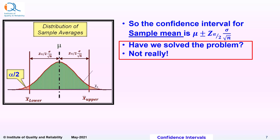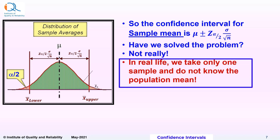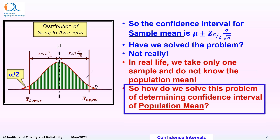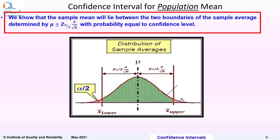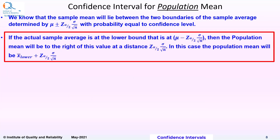Have we solved the problem? Not really. In real life, we take only one sample and do not know the population mean. So how do we solve this problem of determining the confidence interval of population mean? Let us see how to determine confidence interval for population mean when we know only a single value of the sample mean. We know that the sample mean will lie between the two boundaries of the sample average determined by mu plus or minus z alpha by 2 sigma by square root n with probability equal to confidence level. If the actual sample average is at the lower bound, that is at mu minus z alpha by 2 sigma by square root n, then the population mean will be to the right of this value at a distance z alpha by 2 sigma by square root n. In this case, the population mean will be x bar lower plus z alpha by 2 sigma by square root n.